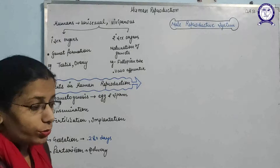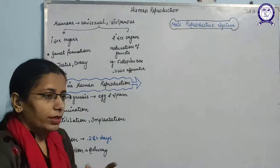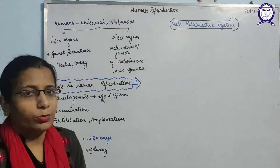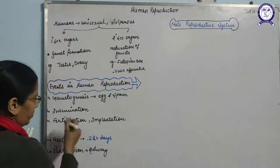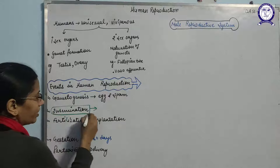Since humans are unisexual, they produce gametes separately. Sperm is motile and small in size, so sperm has to be transferred from the male into the female genital tract. The process of ejaculation of sperm into the female genital tract is known as insemination.